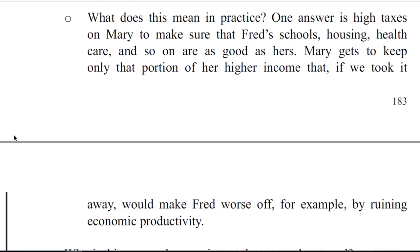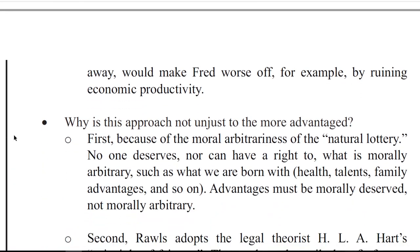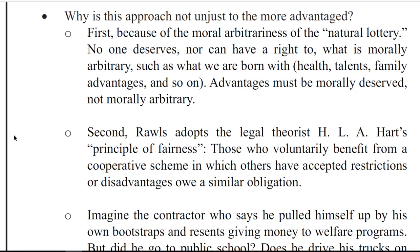What does this mean in practice? One answer is high taxes on Mary's income to make sure that Fred's schooling, housing, health care, and so on are as good as hers. Mary gets to keep only that portion of her higher income that, if we took it away, would make Fred worse off — for example, by ruining economic productivity. Why is this approach not unjust to the more advantaged? First, because of the moral arbitrariness of the natural lottery. No one deserves nor can have a right to what is morally arbitrary, such as what we are born with: health, talents, family advantages, and so on. Advantages must be morally deserved, not morally arbitrary.